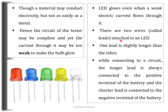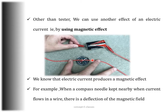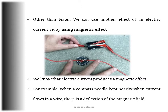An LED glows even when a weak electric current flows through it. There are two leads attached to an LED — one is slightly longer than the other. The longer lead is always connected to the positive terminal of the battery and the shorter lead to the negative terminal. If the electric current is weak, we use an LED instead of a bulb. We can also use the magnetic effect of electric current to make another kind of tester — by keeping a compass needle near a current-carrying wire, even a small current causes a deflection in the needle.